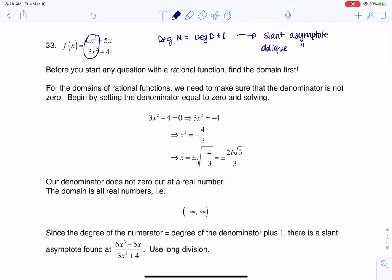Now I always say, when you have a rational function, find the domain first. But the thing about this denominator, if we look at 3x squared plus 4, 3x squared plus 4 never zeros out over the real numbers.